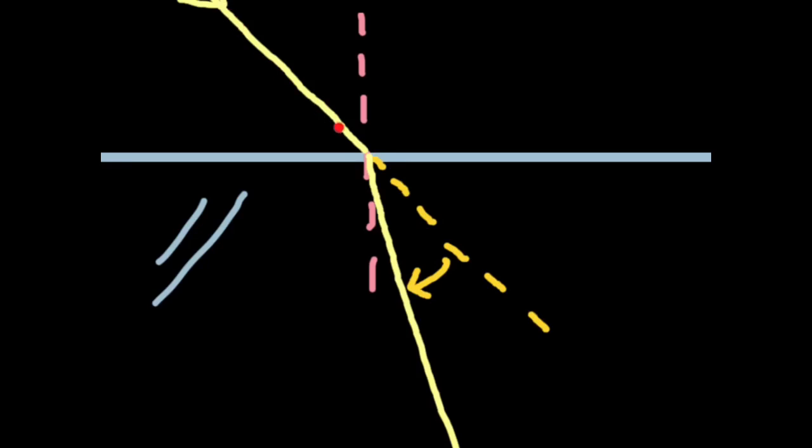So look, light's coming in here. You'd expect it to carry on straight here, but it doesn't. It bends towards this line, towards the normal. So from air to glass, the light bends towards the normal.